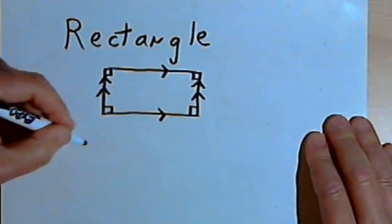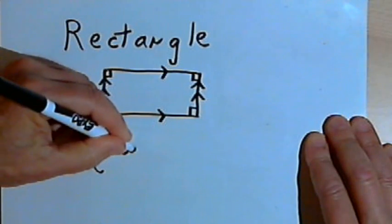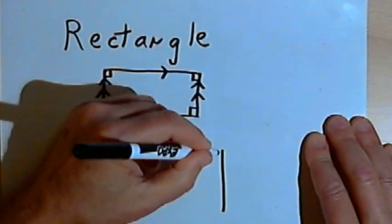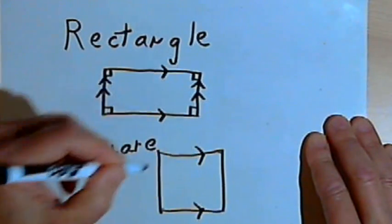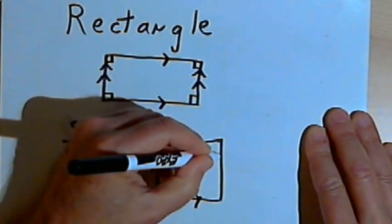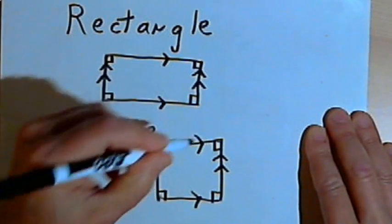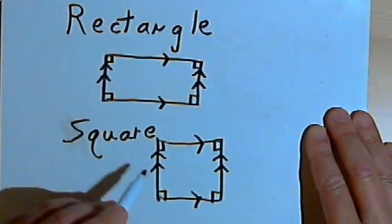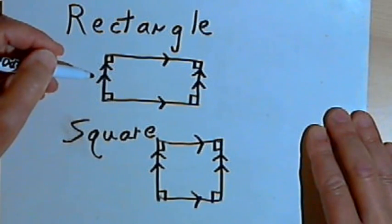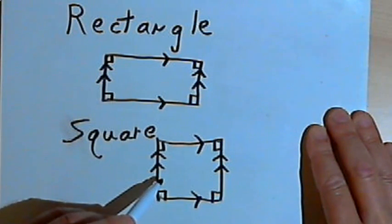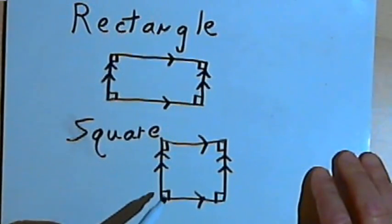If we take a rectangle and make all of the sides the same length, then what we end up with is a square. The square has two pairs of parallel sides, all of the angles are right angles, and all of the sides are the same length. So a square is just a special rectangle, and a rectangle is just a special parallelogram. A square is also a rhombus — it's got two pairs of parallel sides and all the sides are the same length.